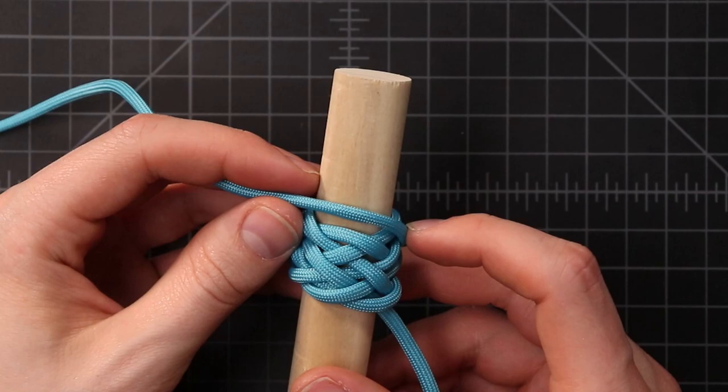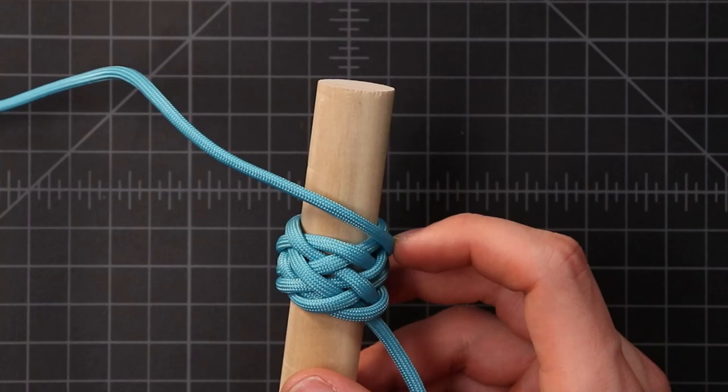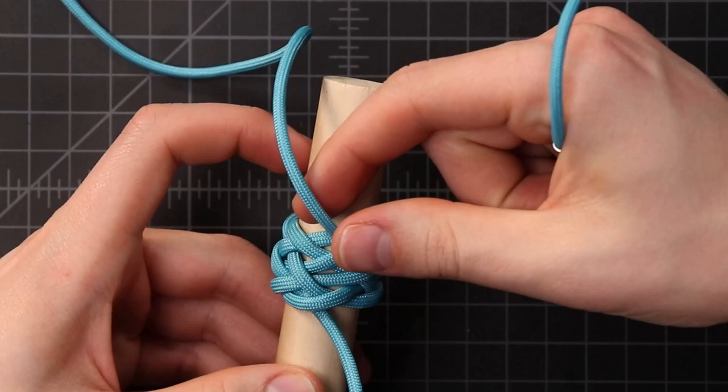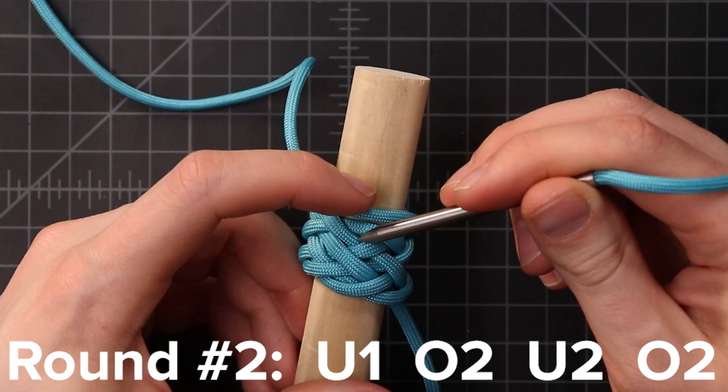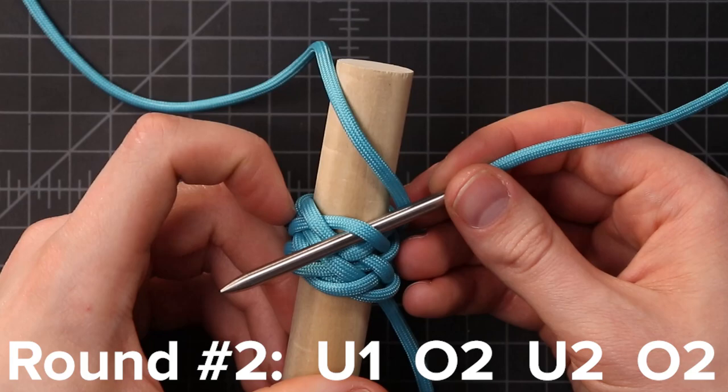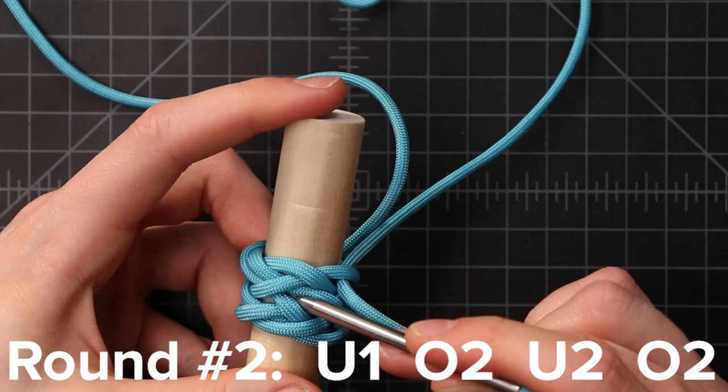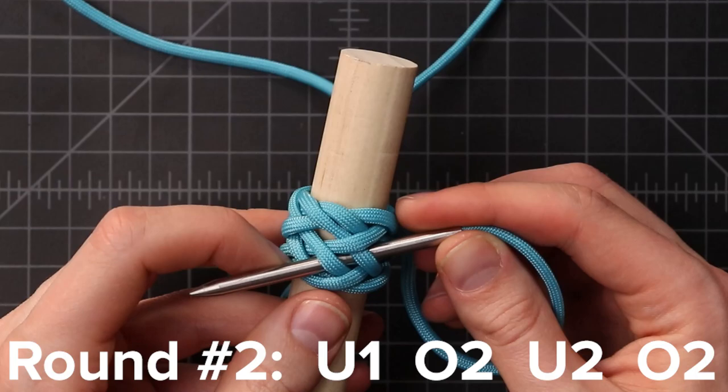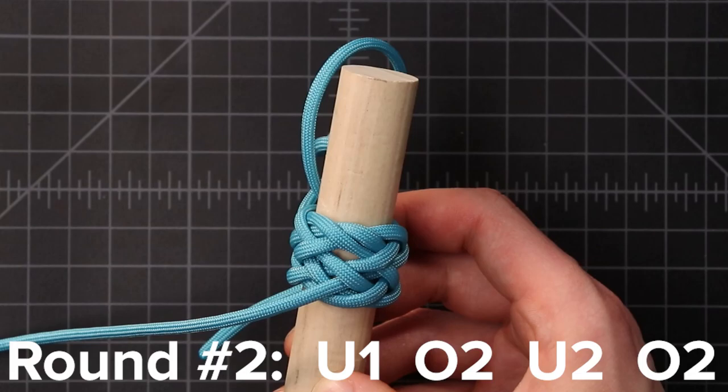On our next pass down, the pattern is gonna change to under one, over two, under two, over two. So looking where we came out right here, we're gonna cross over that bight, to go down right here. So under one, then over two, under two, over two. Pull that through.